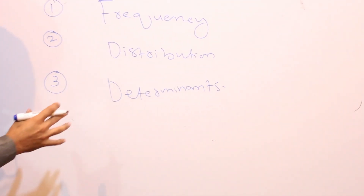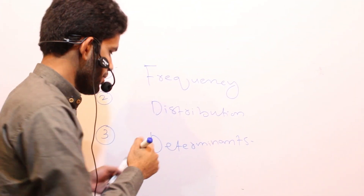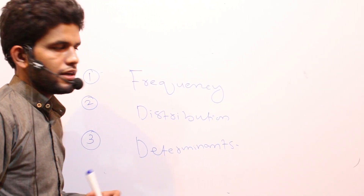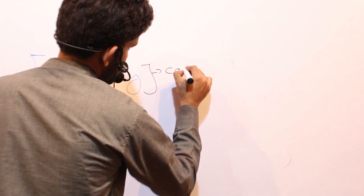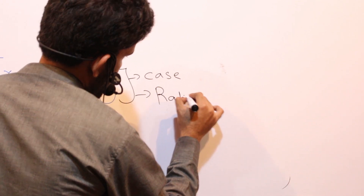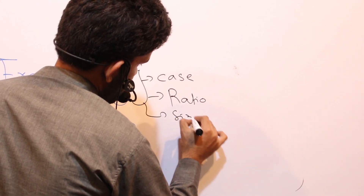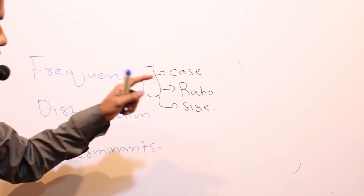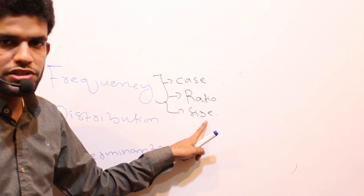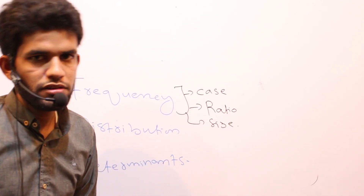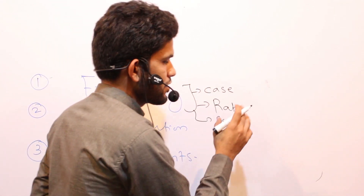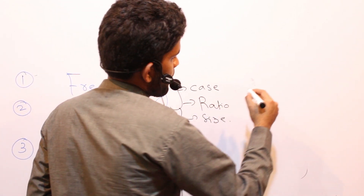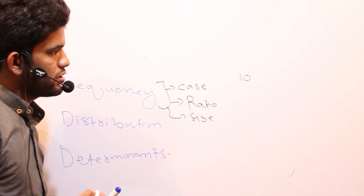Frequency refers to the number of cases — the number of cases of a disease — or the ratio of people affected by a specific disease, or the size of the population that is affected.